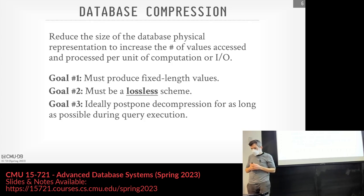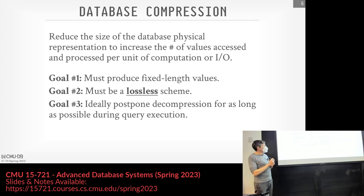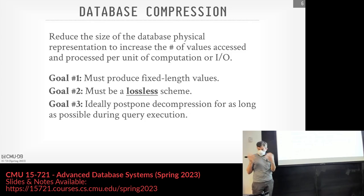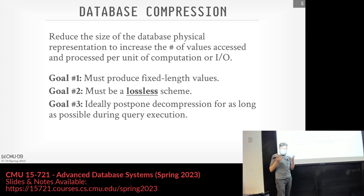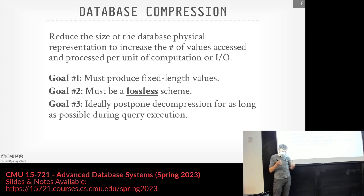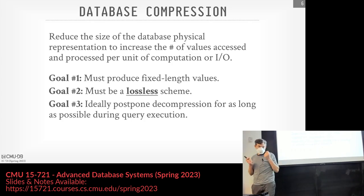The goal of database compression is to reduce the size of the data we're actually storing — the tuples themselves — so that for some amount of data we're reading from disk or network, the number of values we can extract from it will be increased per unit of computation. There are three goals for any compression scheme. The first is that we must produce fixed-length values for everything.